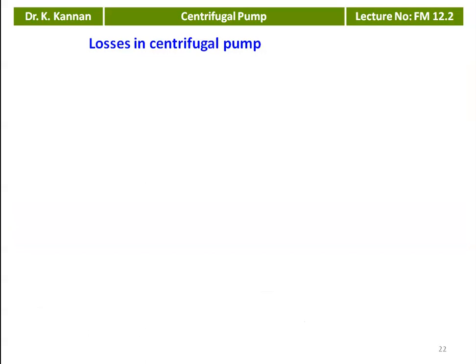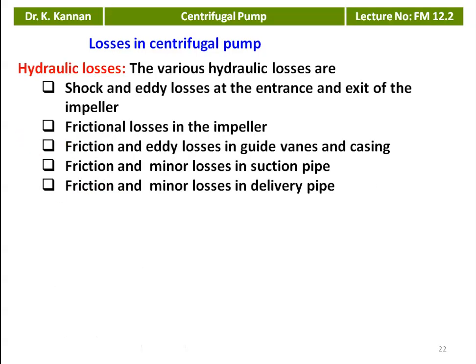We calculated the manometric head equation in the previous lecture. There are some losses in the centrifugal pump. The first loss is hydraulic losses. The various hydraulic losses include shock and eddy losses at the entrance and exit of the impeller. Eddy losses are due to turbulent or circulatory flow of the fluid particle, and there will be shock as fluid suddenly enters the impeller.